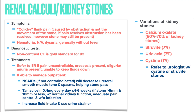The gold standard for diagnosing kidney stones is a non-contrast CT. Refer to the ER if pain is uncontrollable, urosepsis is suspected, oliguria or anuria is present, or the patient cannot keep fluids down. For outpatient management, NSAIDs can decrease urethral smooth muscle tone and spasms to help the stone pass. Tamsulosin (Flomax) is also appropriate. Educate patients to increase fluid intake and use a urine strainer to catch the stone for analysis.